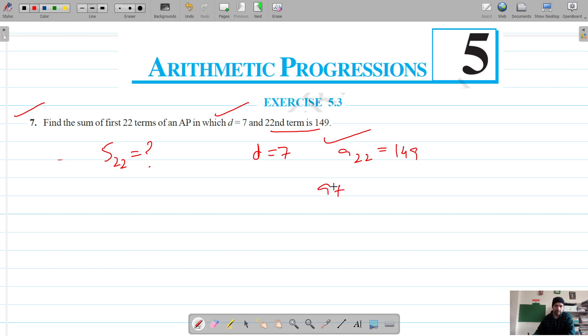So A₂₂ means A plus (N minus 1) into D, which gives us A plus 21D. So A plus 21D is equal to 149, and D is 7. So 21 into 7 is 147, and A plus 147 is 149. So A is 149 minus 147, that is 2.